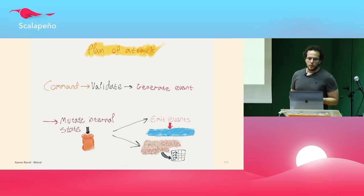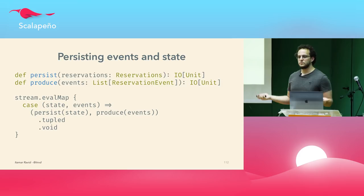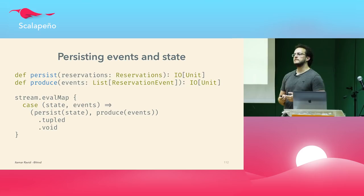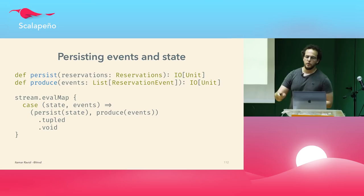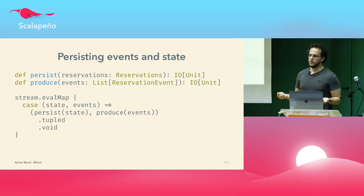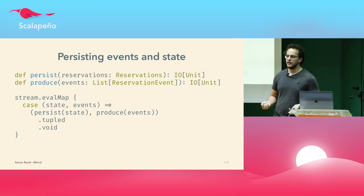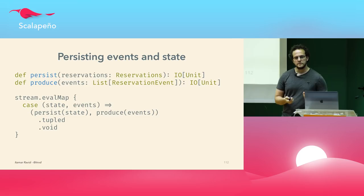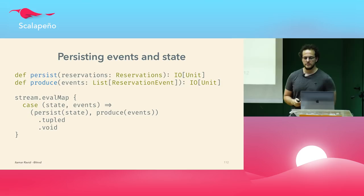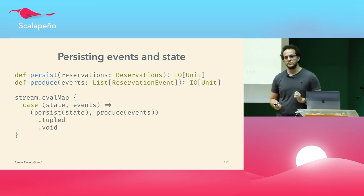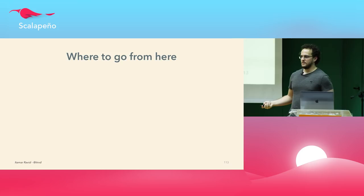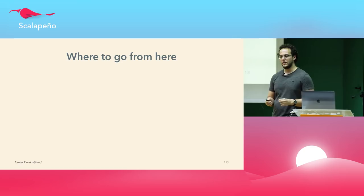We now need to handle persistence. Persistence with streams is easy — write a function that takes events and state and returns an IO, Task, or ZIO of Unit that persists these values, then use evalMap or mapAsync with Akka Streams. If we want to debounce the stream of snapshots and persist them periodically, there's a combinator for that in most streaming libraries. Streams are kind of like god mode for control flow and you should definitely use them to structure your applications. That's essentially almost everything you need to write an application this way.